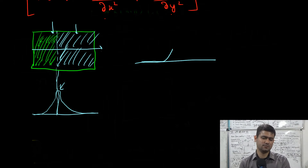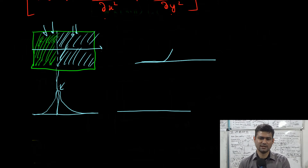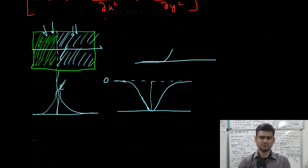Similarly, if green represents the higher value and blue represents the lower value, the derivative will be zero in the constant regions, then decrease to a minimum at the transition, and then increase back to zero. So the first-order derivative based method will find these maxima or minima to identify the edges.